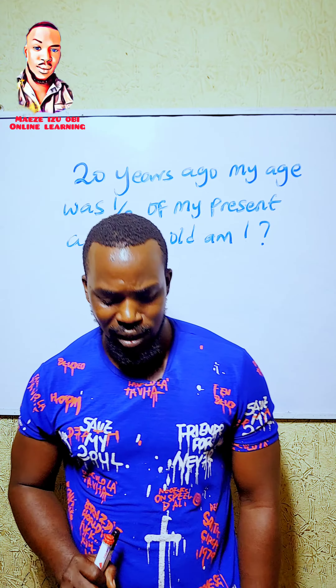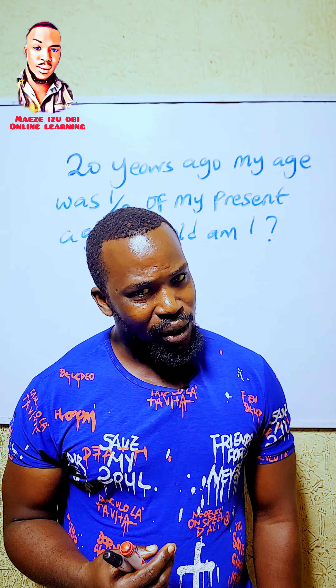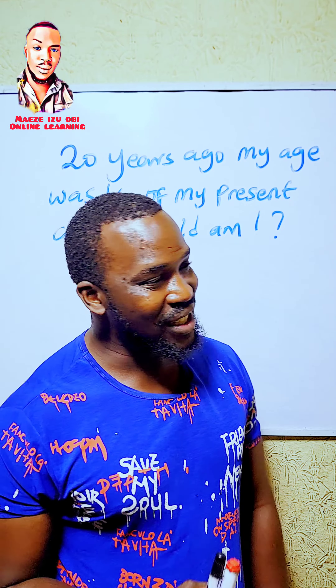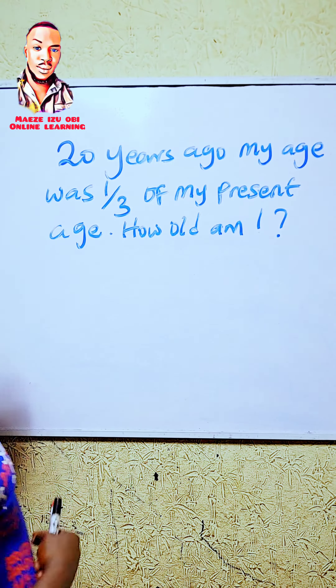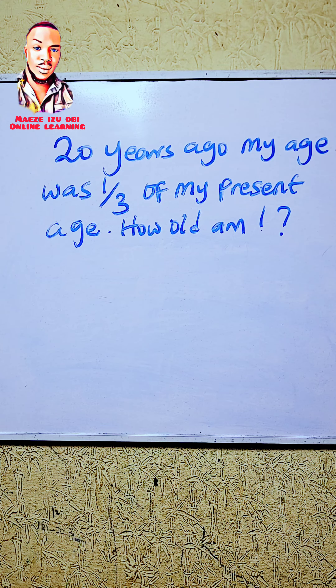Welcome back to Measure Basic Math. Today's question is easy — let me know if you know it. The question is: 20 years ago, my age was one-third of my present age. How old am I now?